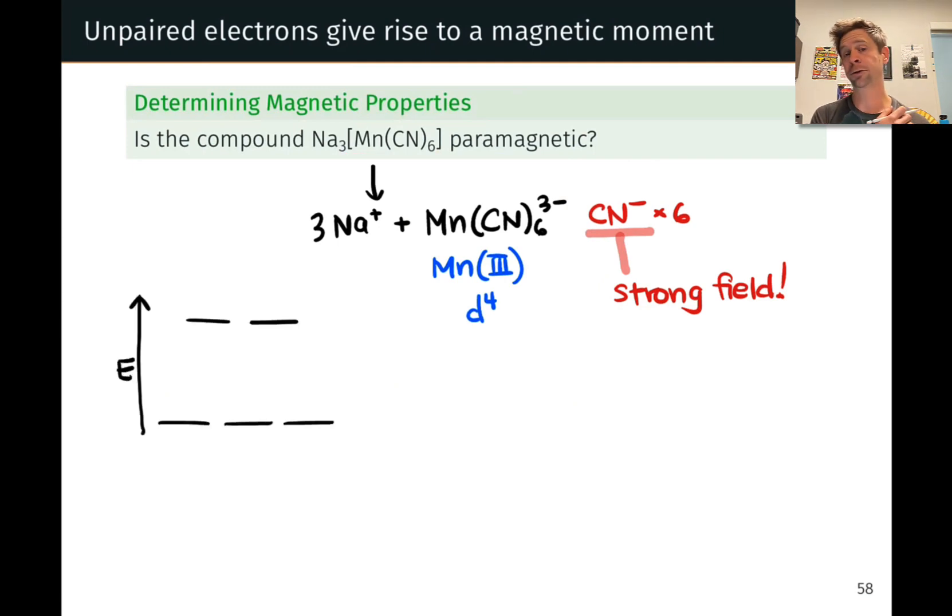So the split d orbitals are going to look something like this, and now we're going to fill in with 4 d electrons. The fact that the cyanide ligand is strong means that once we've filled in the first 3, we are not going to move up to the higher energy level.